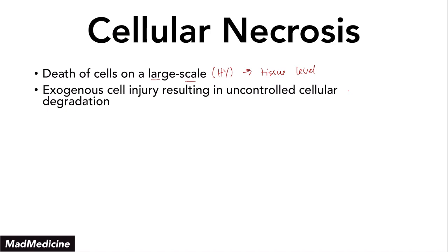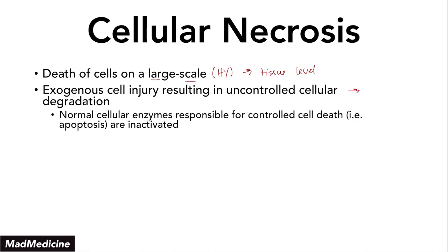That injury could really be anything — damage, trauma, literally anything other than internal insults. In this situation, the normal cellular enzymes responsible for controlled cell death, a.k.a. apoptosis, are inactivated — they are not working. The reason is that this exogenous injury is leading to massive cell die-off, and the intracellular controls don't need to be activated. The cells are probably dying too fast for those control mechanisms to catch up.